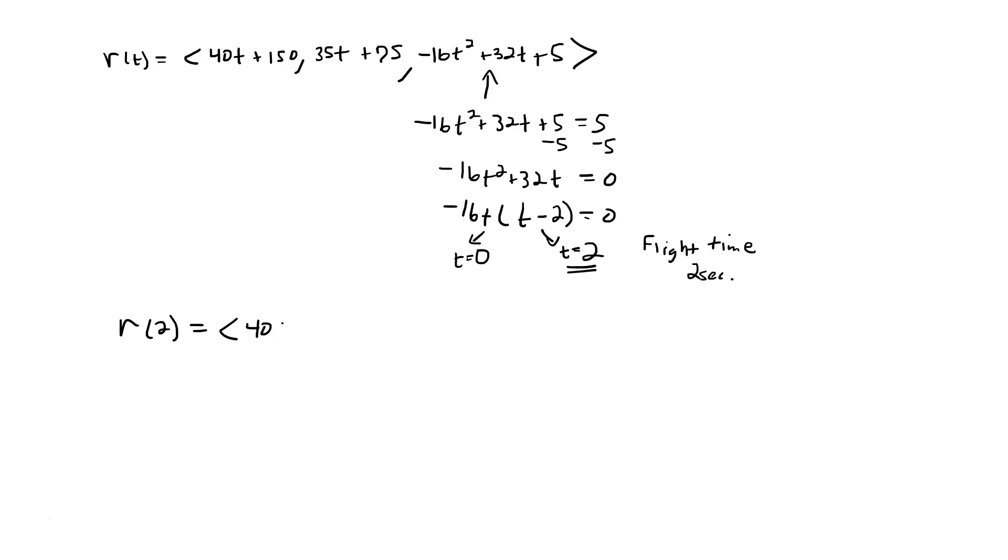And so the question then becomes, well what's the position of the ball at that time. And so we get 40 times 2 plus the 150, 35 times 2 plus the 75, and then we already know the height here is going to be equal to 5. But the real question is about the I and J. Are you in the playing field? So we get 80 plus the 150, so we get 230. We get 70 plus the 75, and so we get 145.